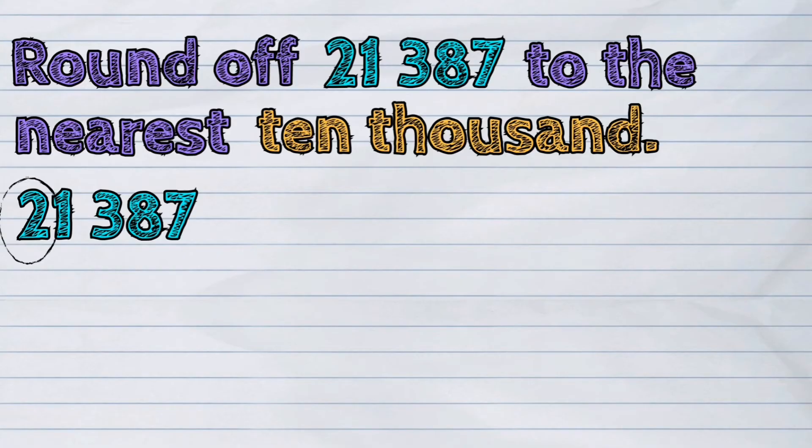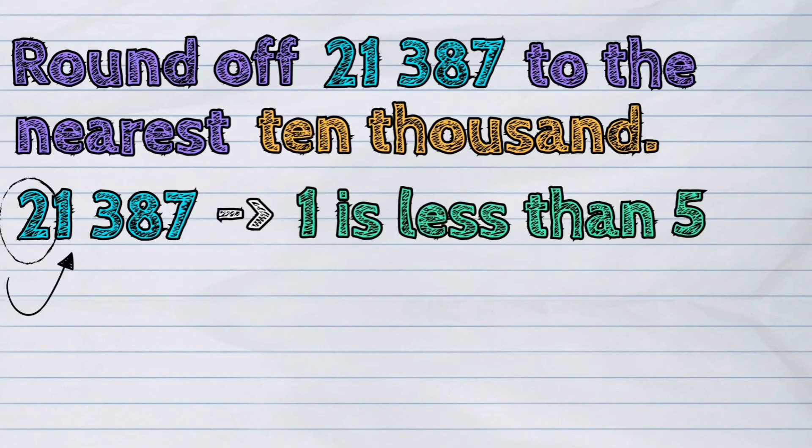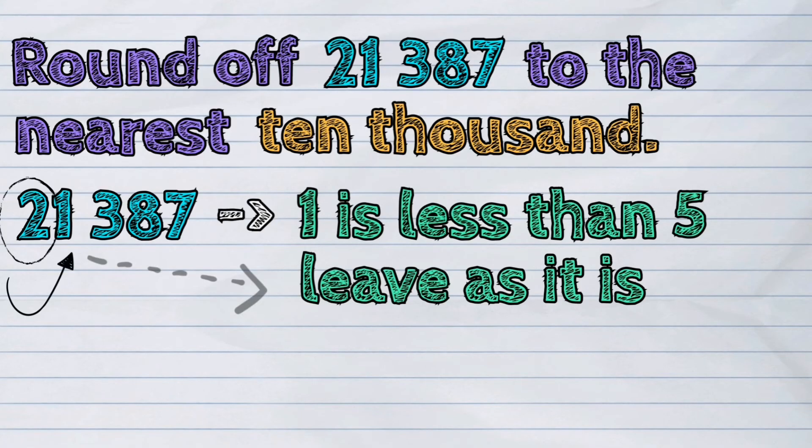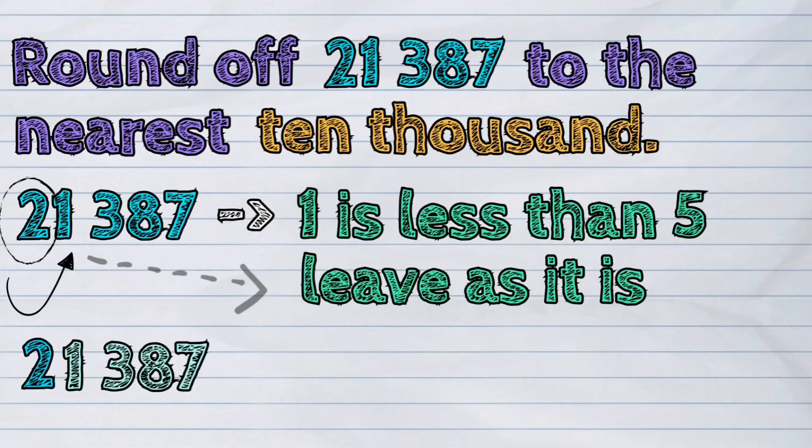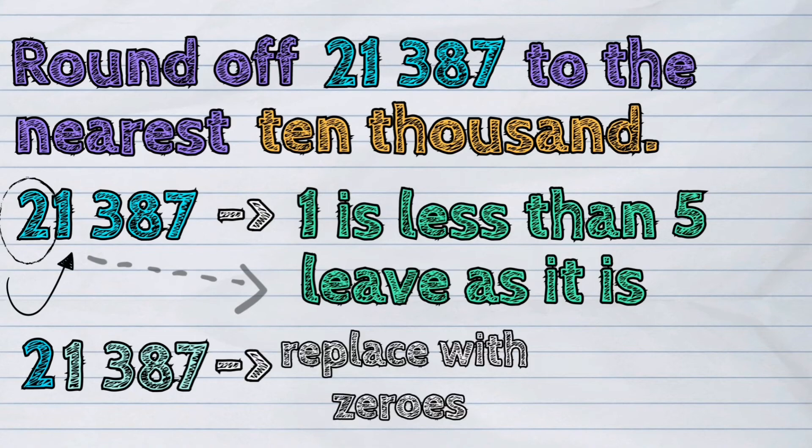Now, the digit to its right is 1. It is less than 5. What we do now is just leave the encircled digit as it is and replace all the digits to its right with zeros.